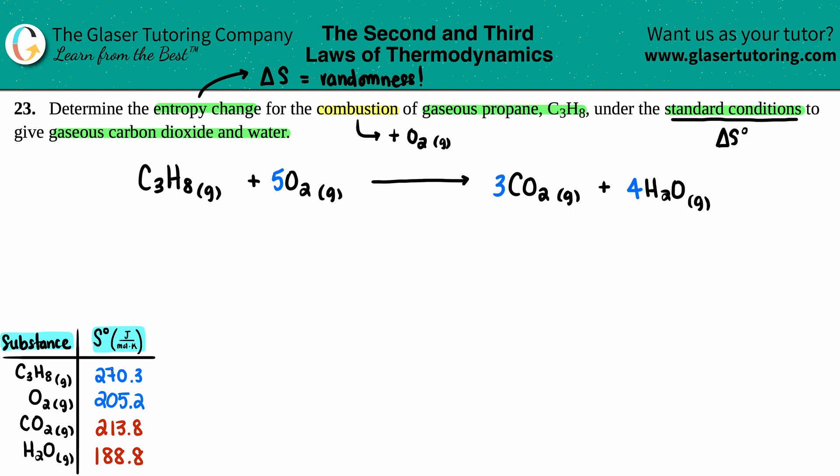So let's just drag them on over here. So the delta S for the C3H8 is 270.3, 205.2 for the oxygen, we have 213.8 for the CO2, and we have 188.8. Just make sure that you're taking the H2O gas one because it's gaseous water and not the liquid one.